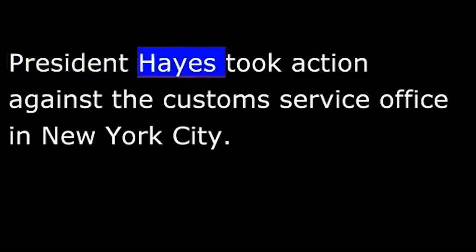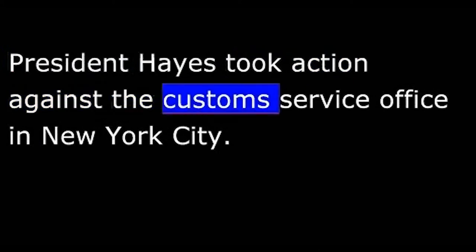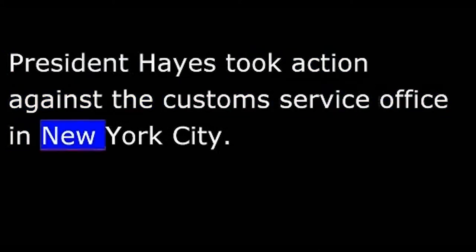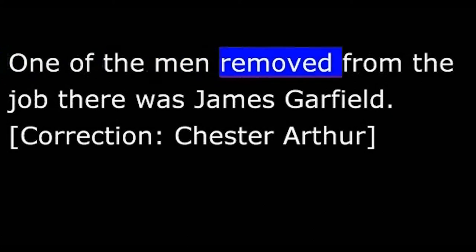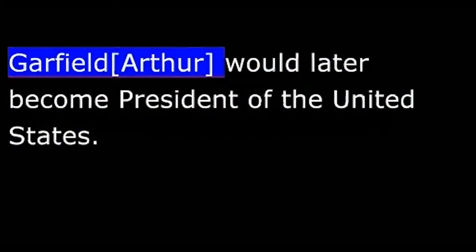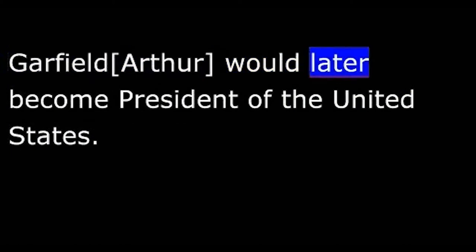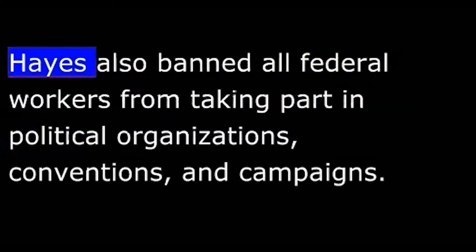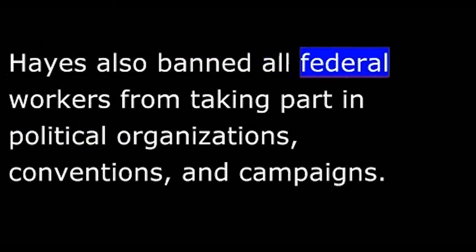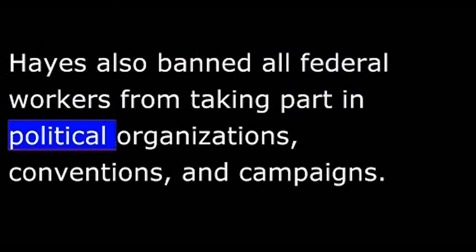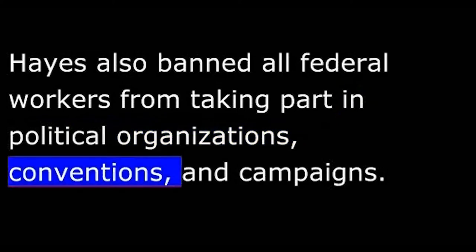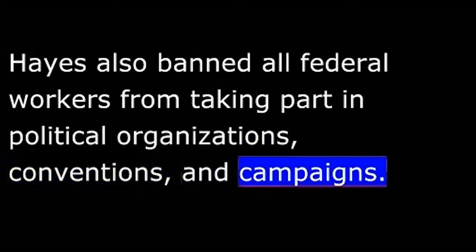President Hayes took action against the Customs Service office in New York City. One of the men removed from the job there was James Garfield. Garfield would later become President of the United States. Hayes also banned all federal workers from taking part in political organizations, conventions, and campaigns.